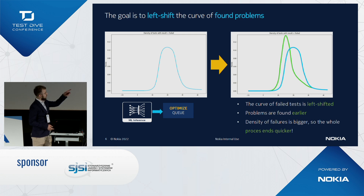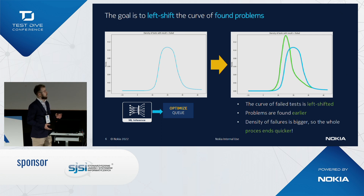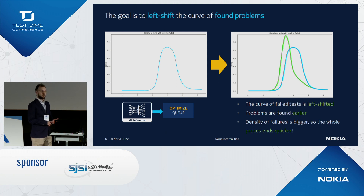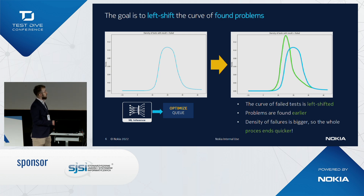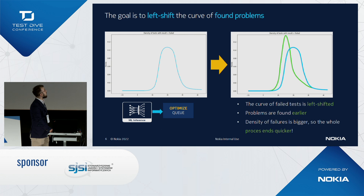If we assume that the left side represents the actual process — the testing suite starts, errors are found, more errors found later, then the suite finishes — we want the whole process to be left-shifted. We want the density of failures shifted to the left so the very same errors are found earlier and in bigger numbers, giving more time to fix them and allowing the testing to finish earlier.